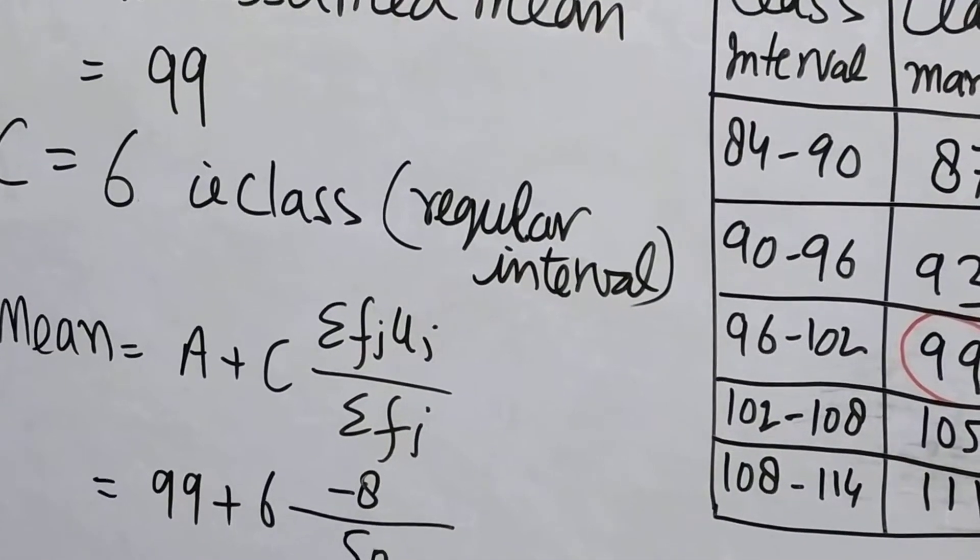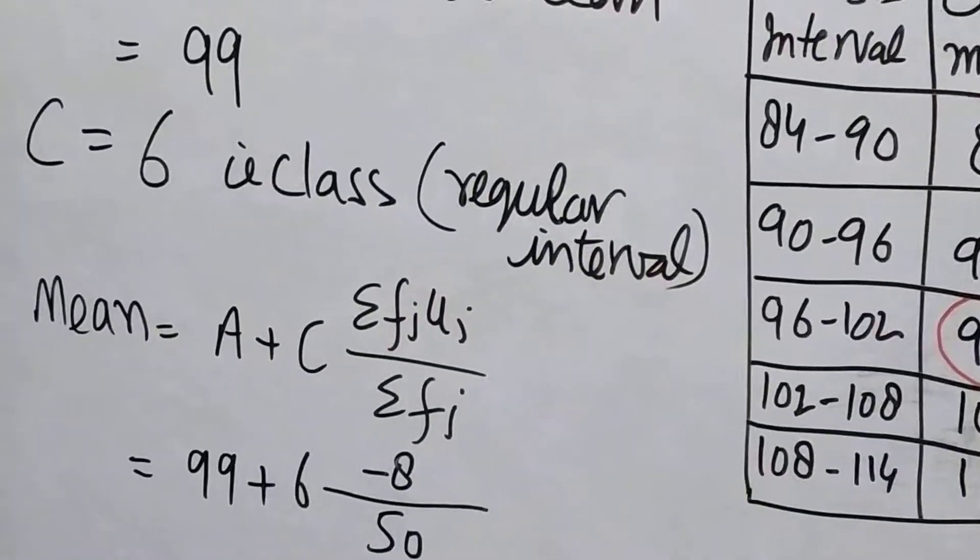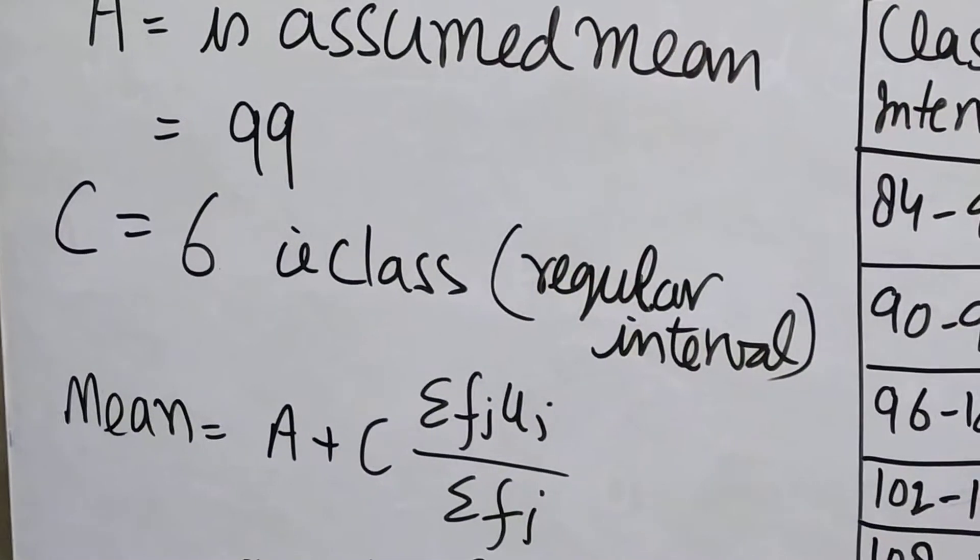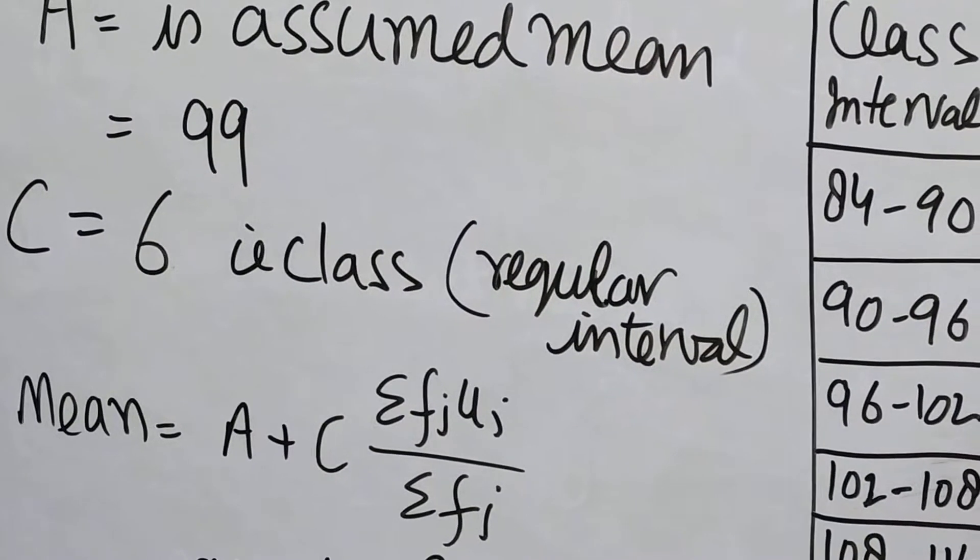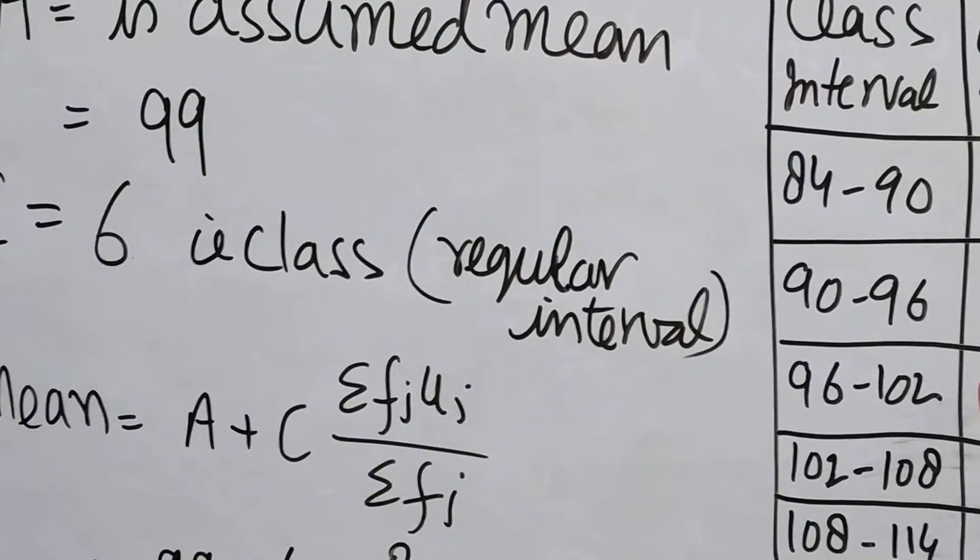Here the mean formula is like this: mean equals A plus C times sigma fi ui upon sigma fi.